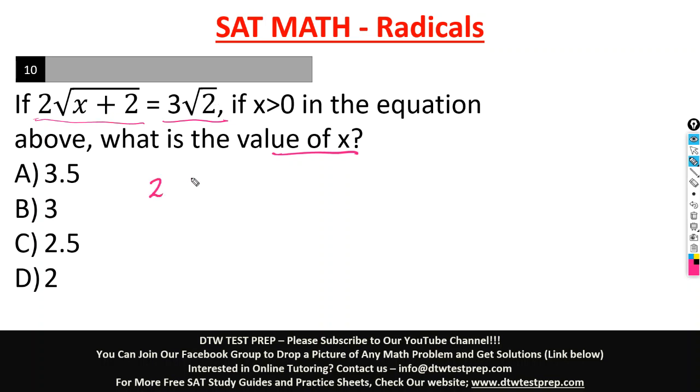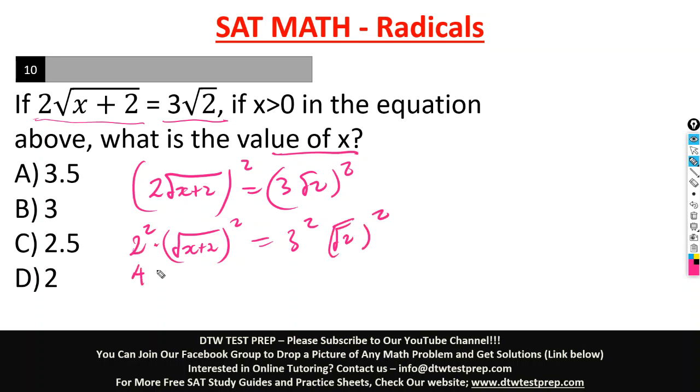We have 2√(x+2) = 3√2, so we square both sides. This would be 2² multiplied by (√(x+2))² equals 3² multiplied by (√2)². When you're squaring a square root, the square and square root cancel out, and you're left with what's inside: x+2.